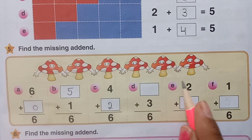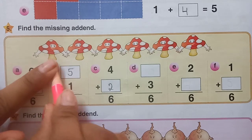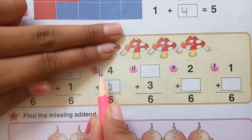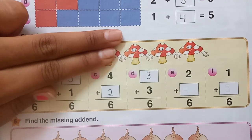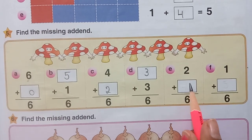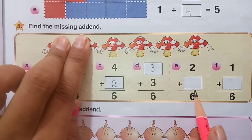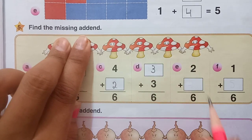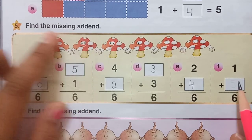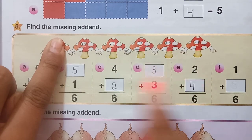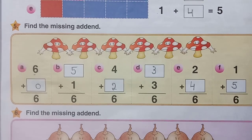Next, in total 6, I have to hide 3 mushrooms: 1, 2, 3. These 3 I am going to hide. Next, in total 6, I have to hide only 2 mushrooms: 1 and 2. These 2 mushrooms we hide, and the remaining are 4. At last, in total 6, if I hide only 1 mushroom, the remaining mushrooms are 1, 2, 3, 4, 5 — remaining are 5 mushrooms.